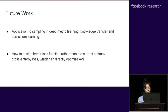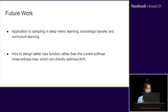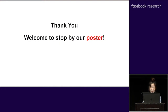For future work, we will make use of AVH in many potential applications such as deep metric learning, fairness in machine learning, knowledge transfer, and curriculum learning. Designing a better loss function than softmax cross-entropy with AVH is still an open problem. Thank you for attending the talk, and welcome to stop by our poster for further details and insights.